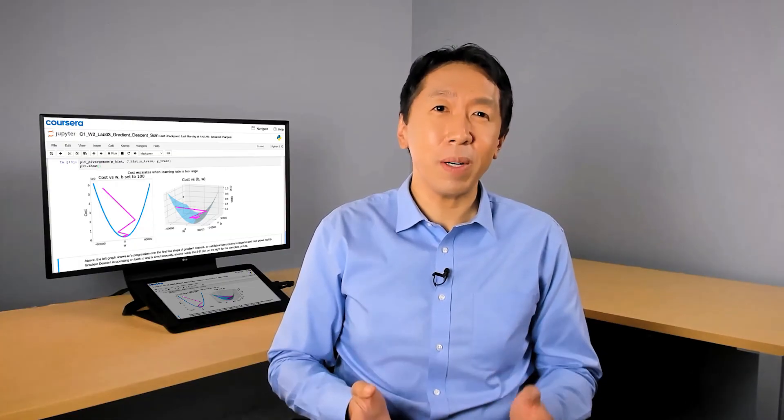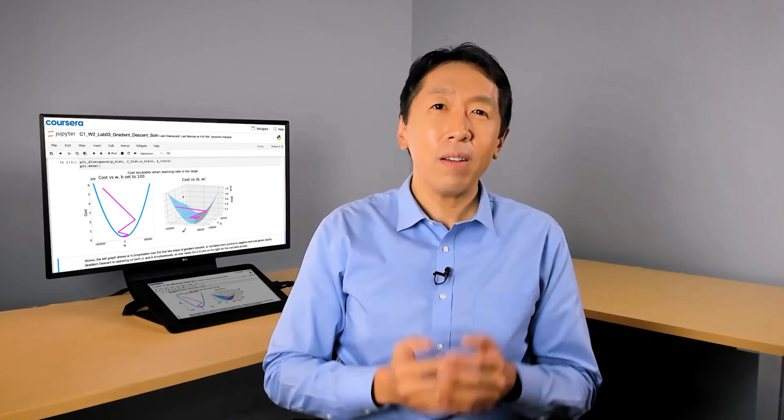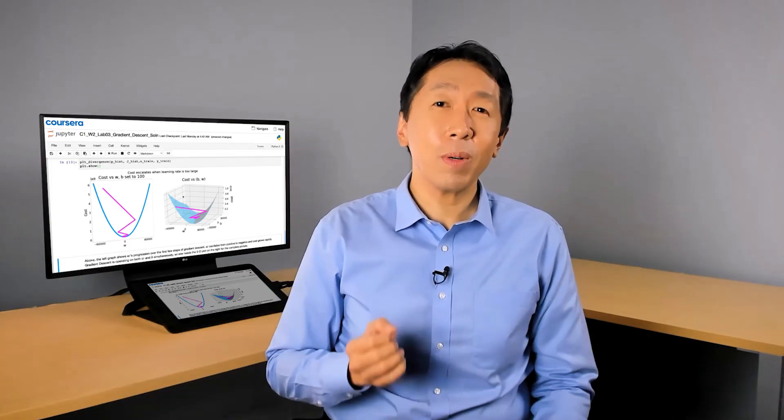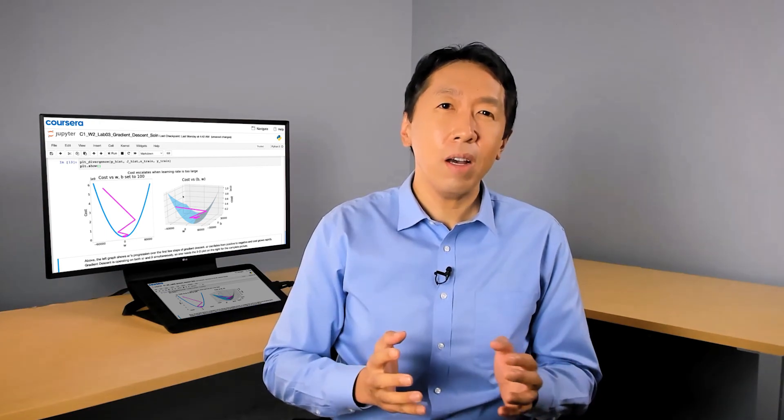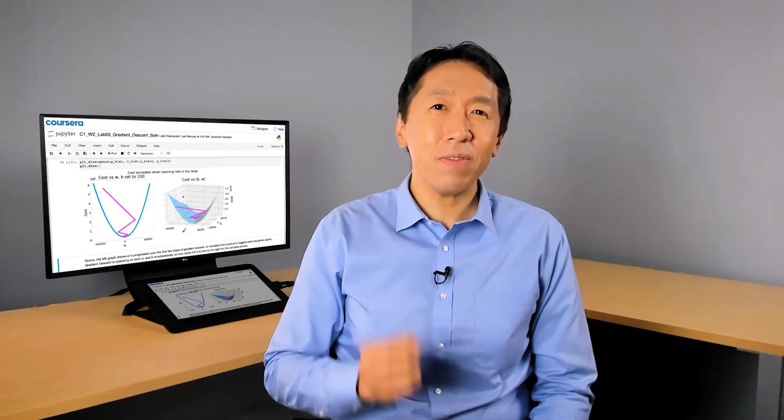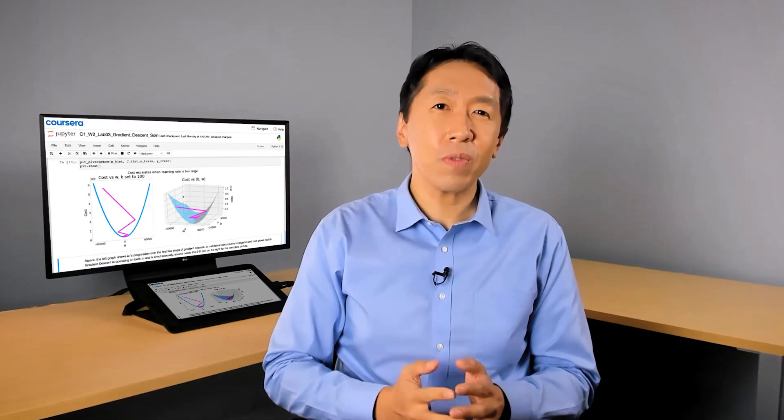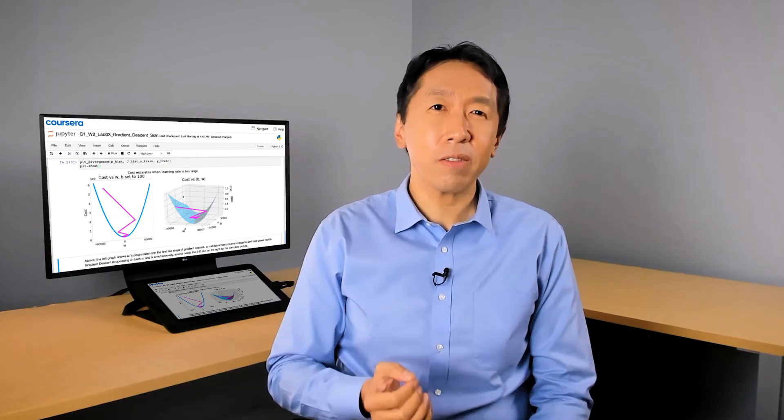You now know how to implement linear regression with one variable, and that brings us to the close of this week. Next week, we'll learn to make linear regression much more powerful. Instead of one feature like size of a house, you'll learn how to get it to work with lots of features. You'll also learn how to fit non-linear curves. These improvements will make the algorithm much more useful and valuable. Lastly, we'll go over some practical tips that will really help for getting linear regression to work on practical applications.